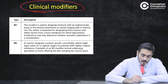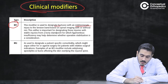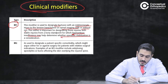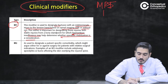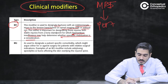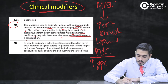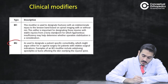There were clinical modifiers defined by AO with respect to management. The M1 modifier is used to designate fractures with an indeterminate injury to the tension band structures, which may be seen on spinal imaging with or without MRI. This is important to understand whether ligamentous insufficiency is present — essentially, whether the PLC complex is involved — because this will play a key role in the type of surgery performed.